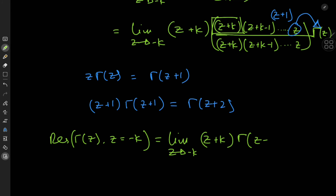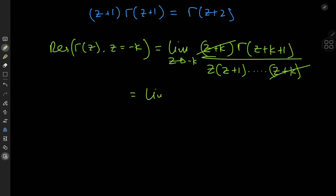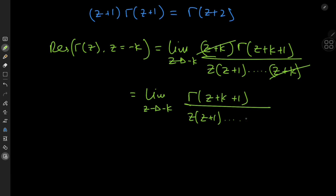Once you get to the final (z + k) term, you get Γ(z + k + 1), divided by everything in the denominator rearranged as z·(z + 1)···(z + k). The (z + k) terms cancel out nicely, leaving us with the limit as z approaches −k of Γ(z + k + 1) divided by z·(z + 1)···(z + k − 1).